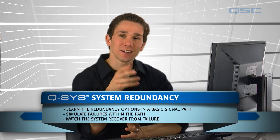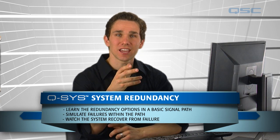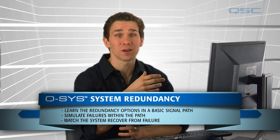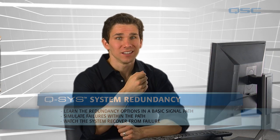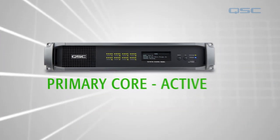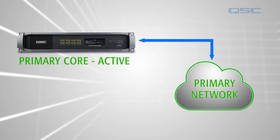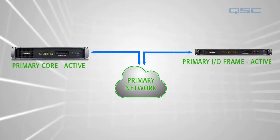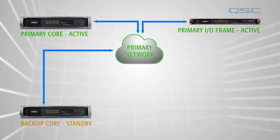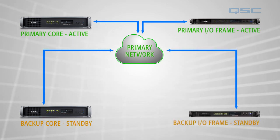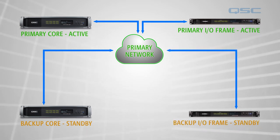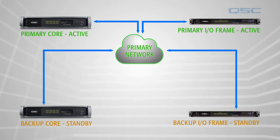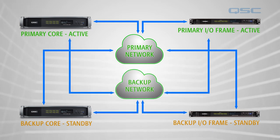Let's talk about some of the redundancy options in your Q-SYS system and show you how quickly the system can recover from a hardware failure. In a basic signal path, your core is connected to your network through which it communicates with any I/O frame. You can have a backup core on your network as well as a backup I/O frame, and since every core and every I/O frame has two Ethernet ports, you can also employ a backup network.